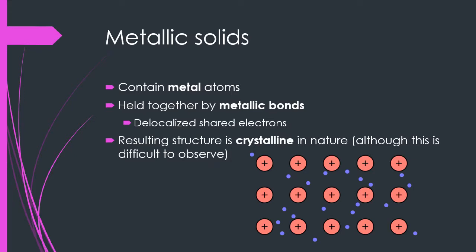The first of these categories is metallic solids. These generally contain metal atoms, although occasionally a different atom may be subbed into the structure, but still majority metal. They are held together by metallic bonds, which involves the delocalized sharing of electrons — electrons that are free to move throughout the structure and owned by all of the atoms within it.